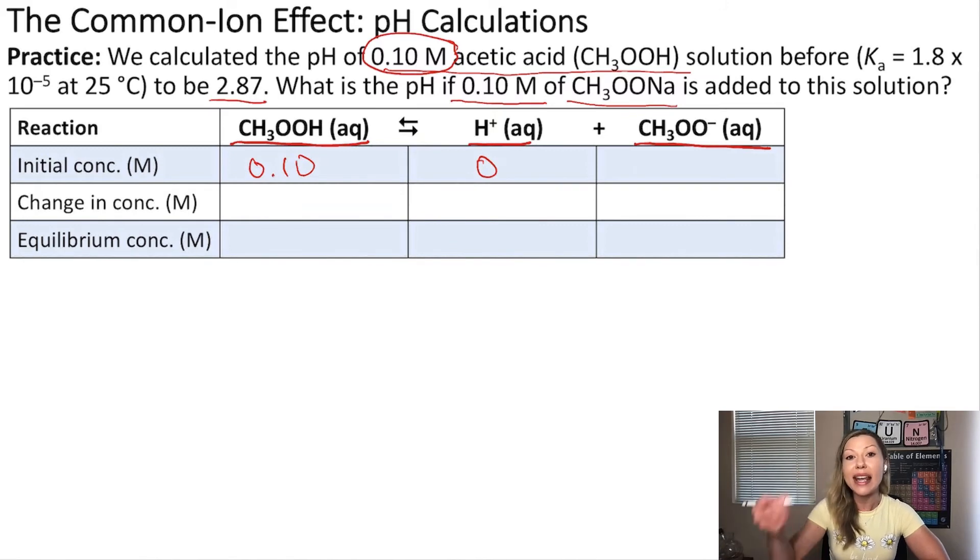And because I added to this solution 0.10 mol per liter of sodium acetate, which dissociates into acetate ions and sodium ions, I have already at the beginning 0.10 mol per liter of that. All right, what is the change in concentration? Well, I'm going to have minus X for acetic acid, then plus X for H+, and plus X for CH3COO-.